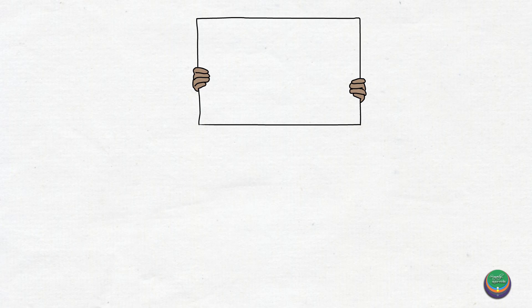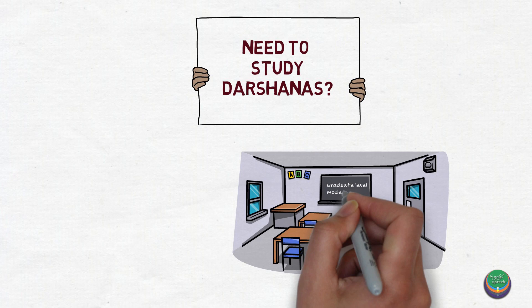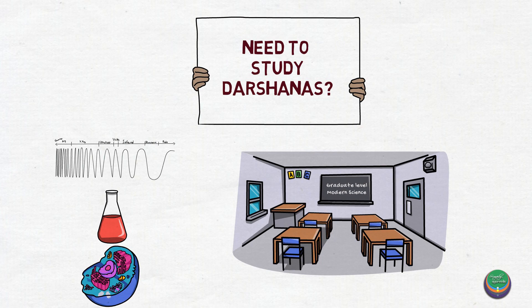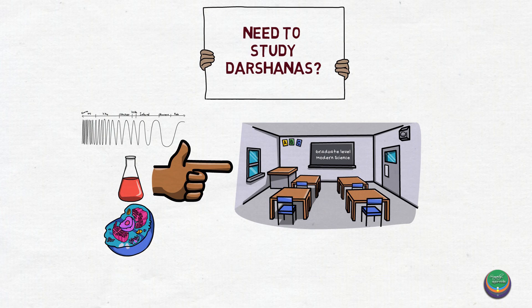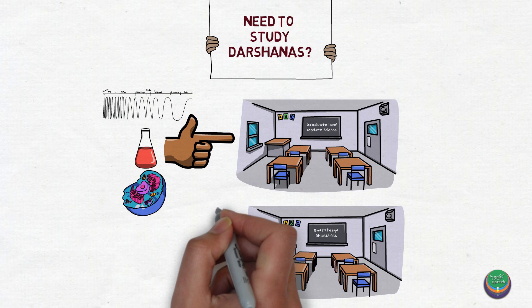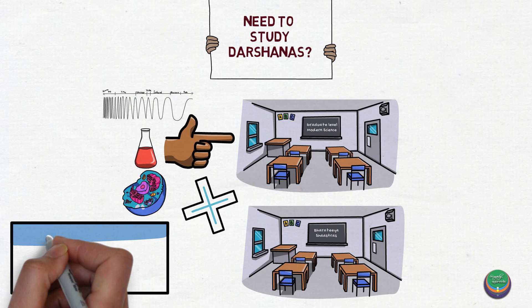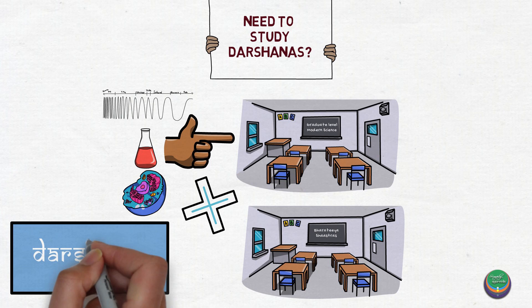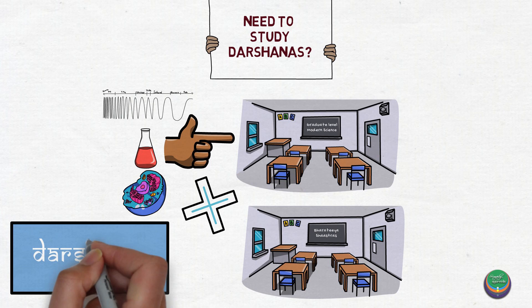Why should we know about these darshanas? We know that prior to learning engineering or allopathic medicine, it is essential that we have a thorough understanding of the basics of physics, chemistry, and biology, because these serve as a foundation for better learning and understanding the sciences. Similarly, when it comes to Indian sciences like Ayurveda or Vastu Shastra, whose derivatives are the darshanas, the science that we learn in school won't help us understand the essence of them. The education should commence from darshanas themselves, because they contain all the basic knowledge necessary to lay the foundation for a good education.